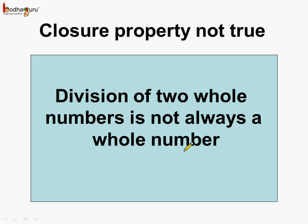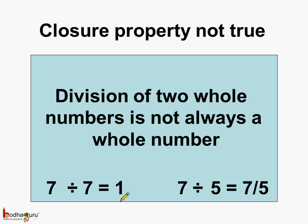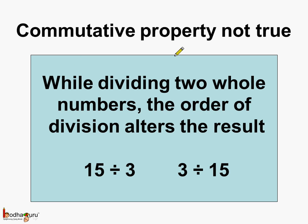So let us see the two properties which we learnt today. First, the closure property does not hold true for division of whole numbers, which means division of two whole numbers is not always a whole number. Like we saw, 7 divided by 7 is equal to 1, which is a whole number, but 7 divided by 5 is equal to 7 by 5, which is not a whole number. Next, the commutative property does not hold true for division of whole numbers, which means while dividing two whole numbers the order of division alters the result. Like, 15 divided by 3 is not equal to 3 divided by 15.